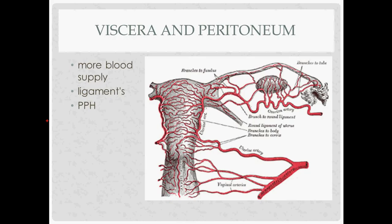The infundibulopelvic ligament is the same as the suspensory ligament of the ovary and carries the ovarian vessels. The ovarian arteries come down in the IP ligament, supply the ovary, give off tubal branches, and meet up with the uterine artery. This anastomosis is important surgically: if you cut either artery, you must seal both ends, because blood can still flow from the other vessel through the anastomosis and out where you cut.